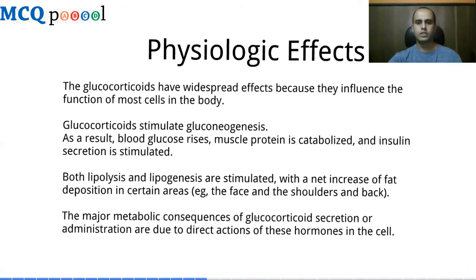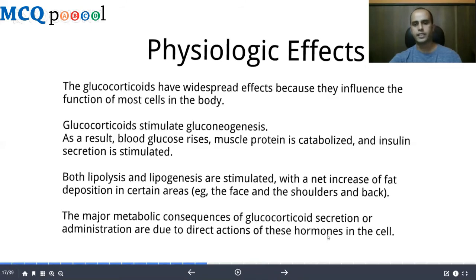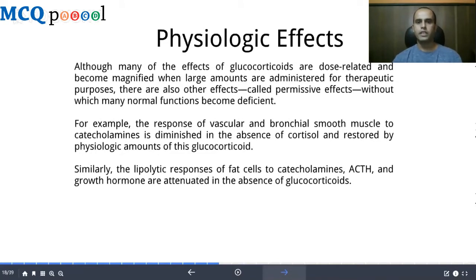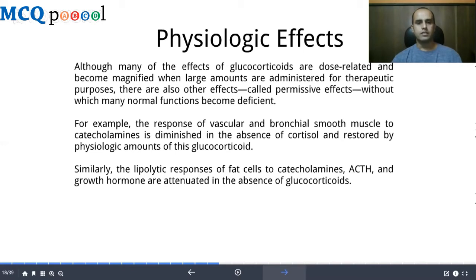A major metabolic consequence of glucocorticoid secretion or administration is due to the direct action of this hormone. Many effects of glucocorticoids are dose-related and become magnified with large therapeutic amounts. There are also permissive effects — effects without which normal functions become deficient. For example, the vascular and bronchial smooth muscle response to catecholamines is diminished in the absence of glucocorticoids and restored when physiological amounts are given. Similarly, the lipolytic response of fat cells to catecholamines, ACTH, and growth hormone is attenuated in the absence of glucocorticoids.